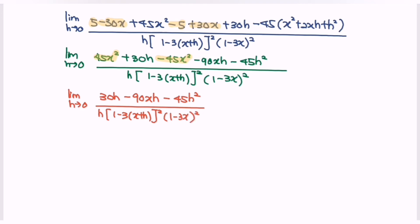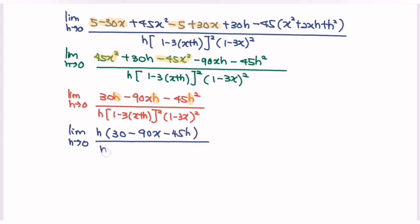Next, we need to factor out h from the numerator. So rewriting the situation: limit when h approaching 0, h multiplied with (30 minus 90x minus 45h), over h bracket 1 minus 3(x plus h) bracket squared, multiplied with 1 minus 3x bracket squared. The h cancels and we simplify to obtain 1.